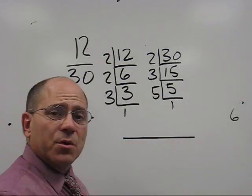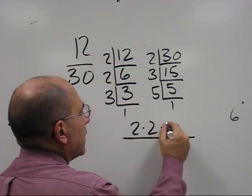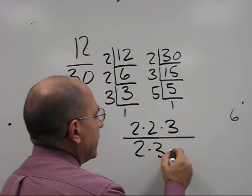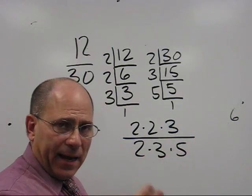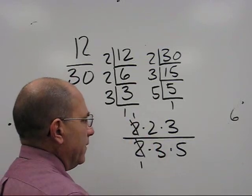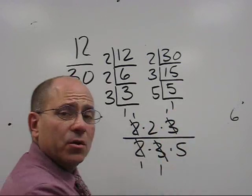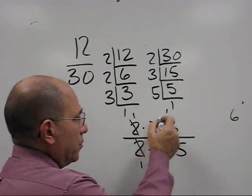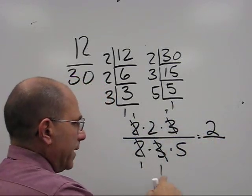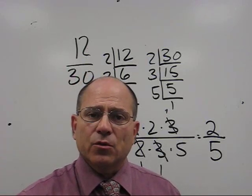Now I'm going to take my factors and put them onto the bar. So 12 was 2 times 2 times 3. And 30 was 2 times 3 times 5. And now we look for the factors that are the same to cancel. 2 divided into 2 equals 1. And 3 divided into 3 equals 1. And now we multiply the numerators. 1 times 2 times 1 is 2. And 1 times 1 times 5 is 5. And that's prime factoring to reduce fractions.